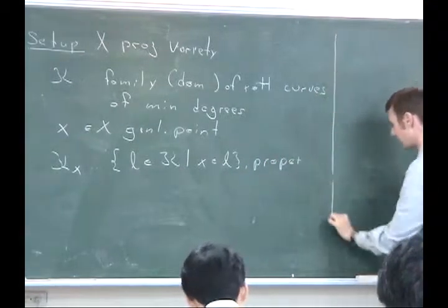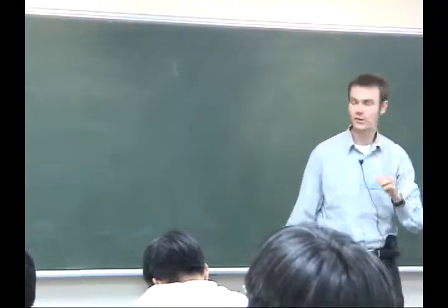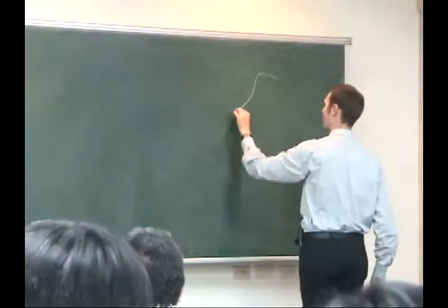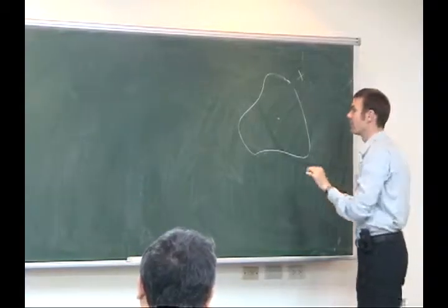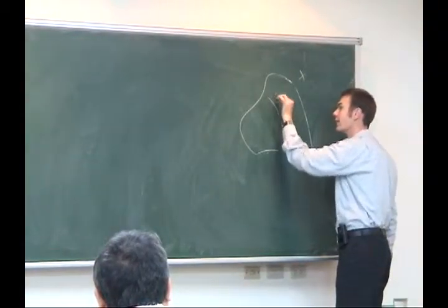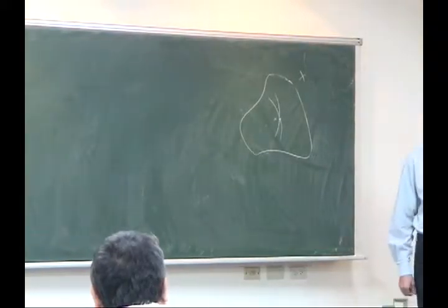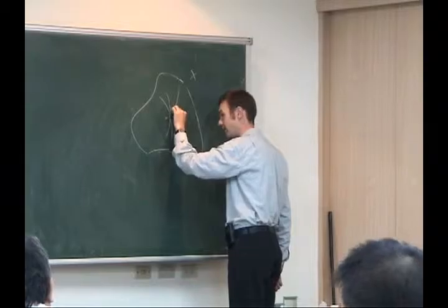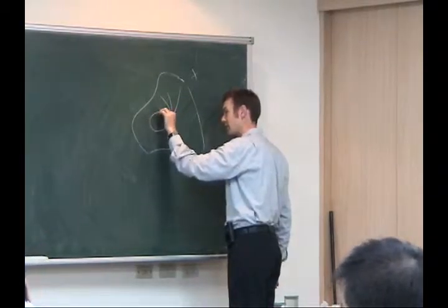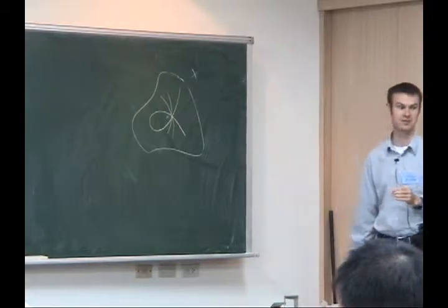The main statement of yesterday was that in the setup where I have the manifold X and a point x, if I look at those lines that contain the point x, they can't be all too singular. Finitely many of them can have singularities at x, but these singularities can only be immersed — they never look like cusps.